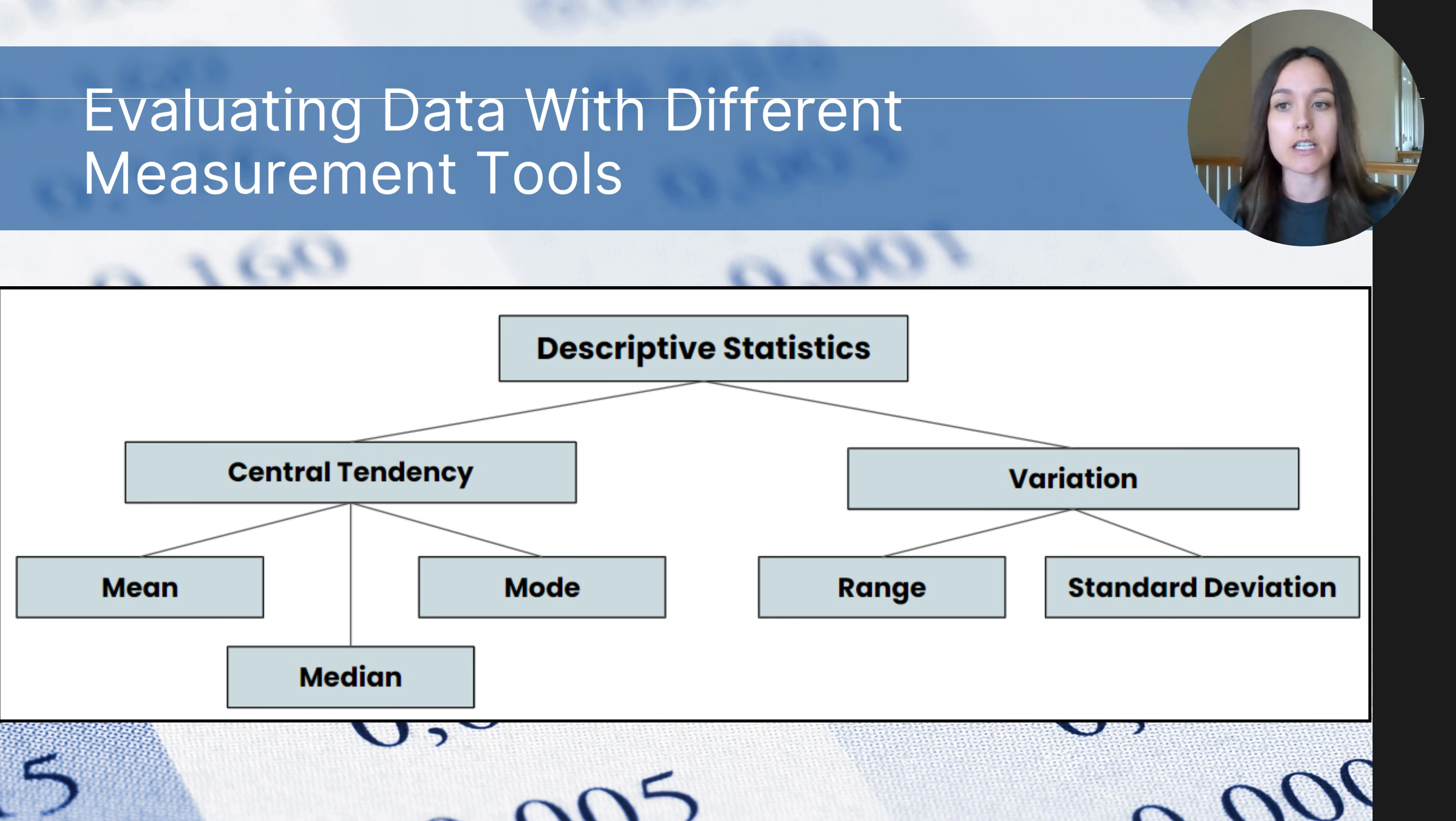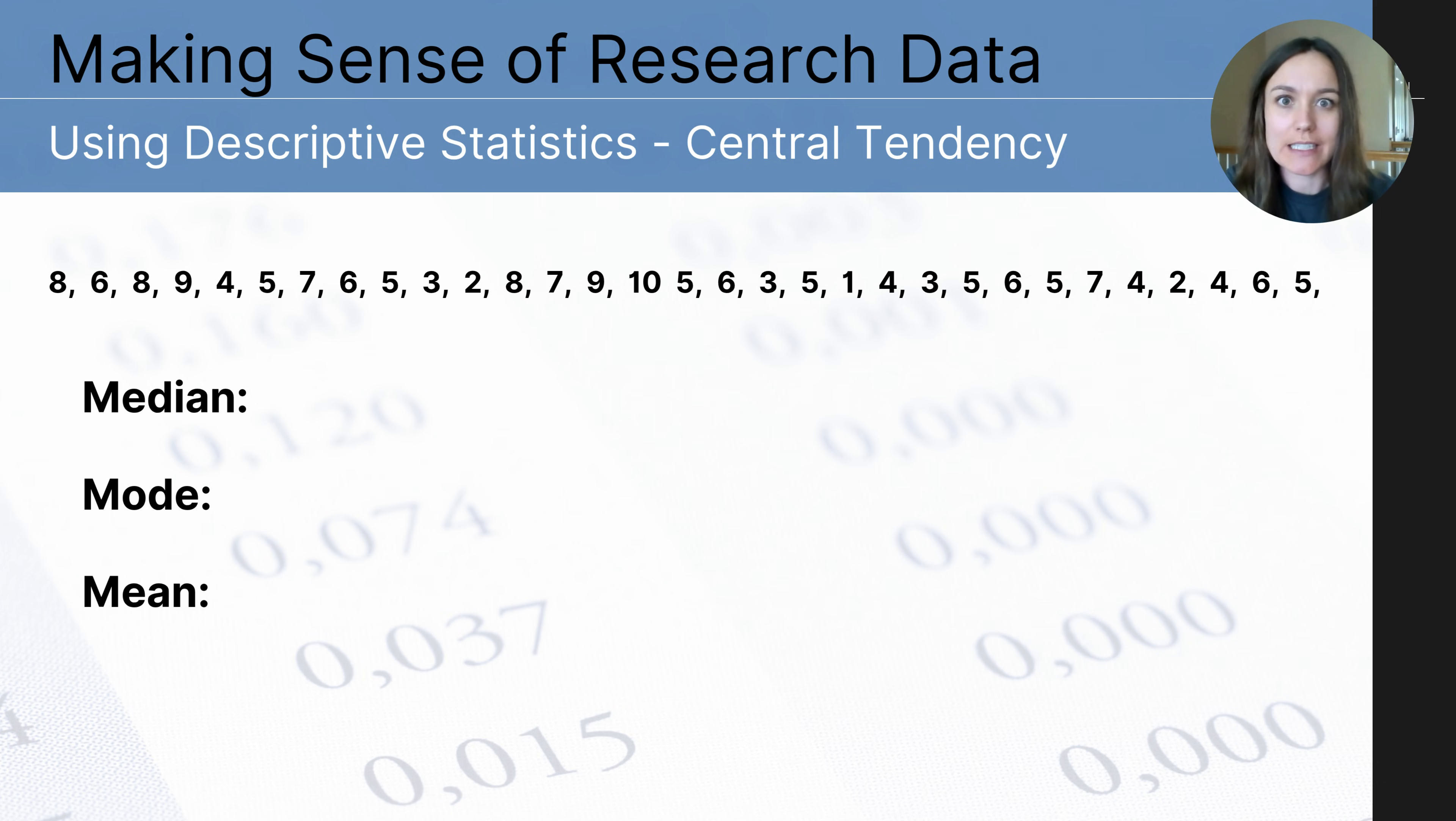And if you've taken a statistics class, then you're likely also familiar with standard deviation. Measures of central tendency, these are tools that help us summarize the center of the data. And measures of variation help us understand the distance or the spread of the data. So let's start with a practice example.